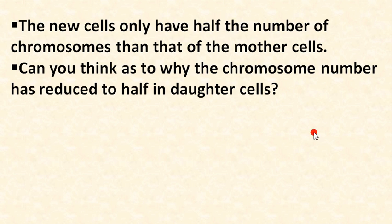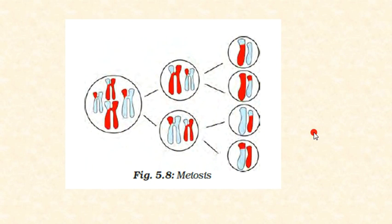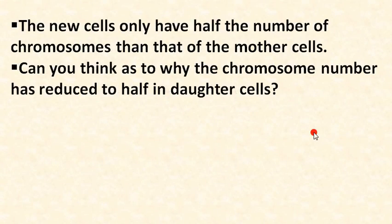The new cells produced by meiosis have only half the number of chromosomes as the mother cell. Think about why the chromosome number has been reduced to half in the daughter cells — this is an important question to consider.